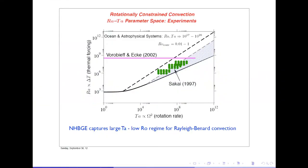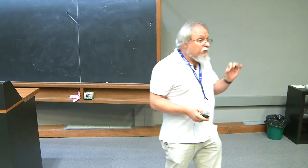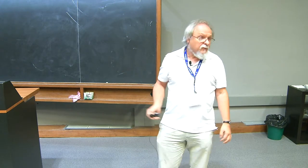If I calculate the Rossby number from the typical velocity driven by buoyancy, Rossby number one is along the dashed line, and Rossby number 0.01 is along the other line. I want to go into the rapid rotation, strong heating limit. Sakai's experiment barely gets into this region, as does a nice experiment by Vorobieff and Ecke. I can't do that numerically because under geophysical and astrophysical conditions the Ekman number is 10 to the minus 15. So I want to take the primitive equations and simplify them to treat these inaccessible regions of parameter space.